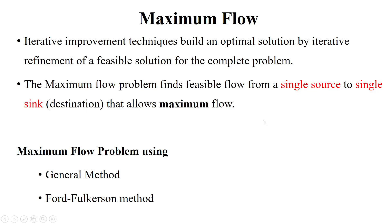Welcome to the session discussing maximum flow in a network. Iterative improvement algorithms are used to build an optimal solution by iterative refinement of a feasible initial solution. We initialize with an initial feasible solution, then apply many iterations to improve that solution until getting the optimal solution. The maximum flow problem is used to find the feasible flow from a single source to a single destination, or sink, allowing maximum flow between them.